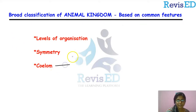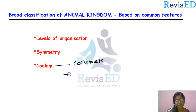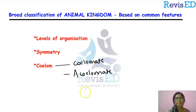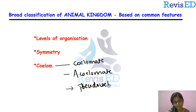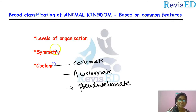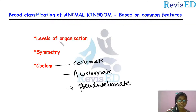The third criterion is the coelom. Animals having a coelom are known as coelomates, those that do not have a coelom are known as acoelomates, and animals having a false coelom are called pseudocoelomates. Based on these three common features, we are going to classify the entire Animal Kingdom into a broad classification.